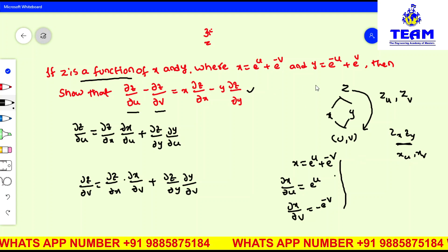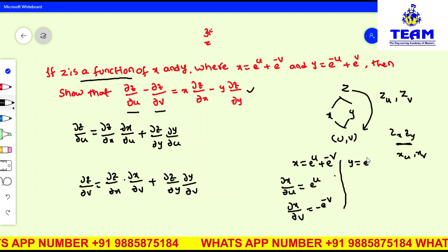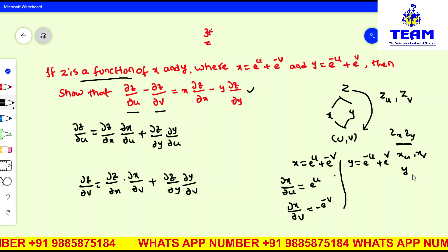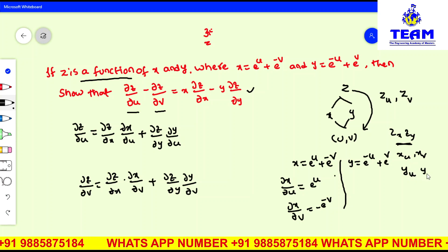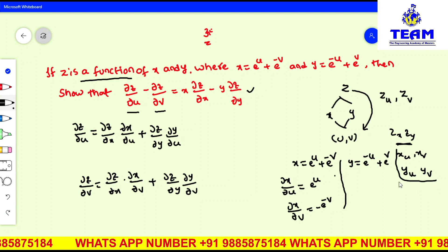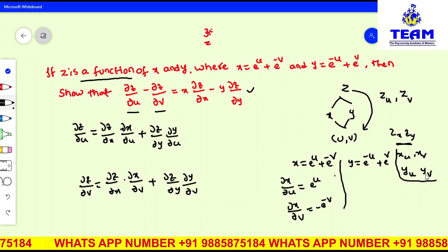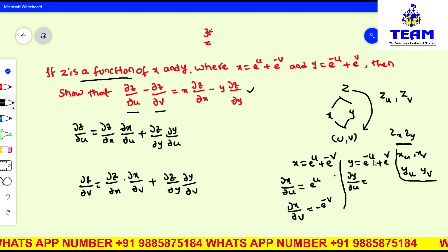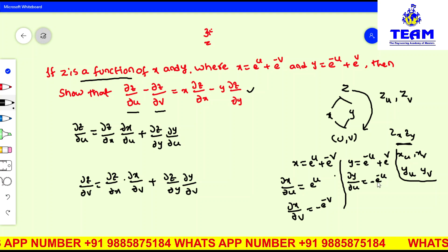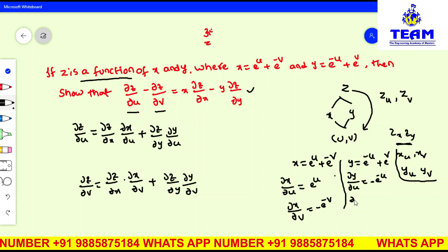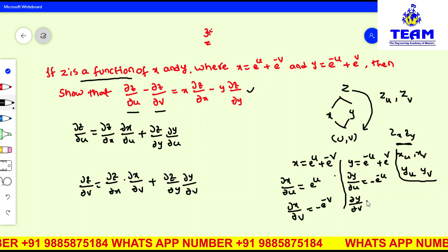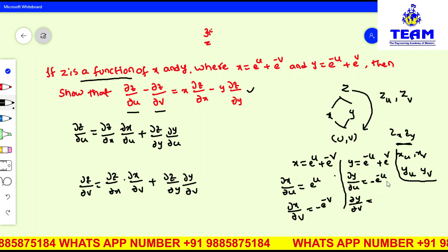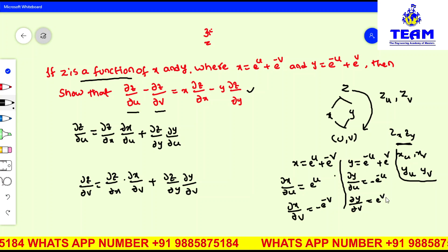Next, y = e^(-u) + e^v. Differentiating y partially with respect to u: the derivative of e^(-u) is e^(-u) times minus 1, and e^v has no u term so its derivative is zero. So ∂y/∂u = minus e^(-u). For ∂y/∂v: e^(-u) has no v term so its derivative is zero, and the derivative of e^v is e^v. So ∂y/∂v = e^v.